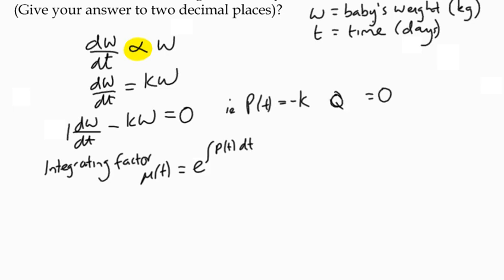The integral of p of t dt, that's going to be the integral of negative k dt, which gives us negative kt plus c, but we don't need that constant. Which means our integrating factor is e to the negative kt.